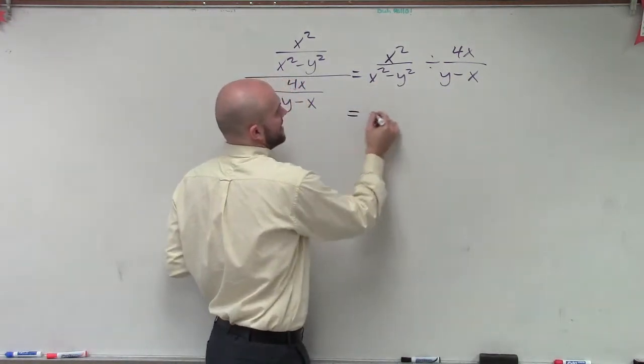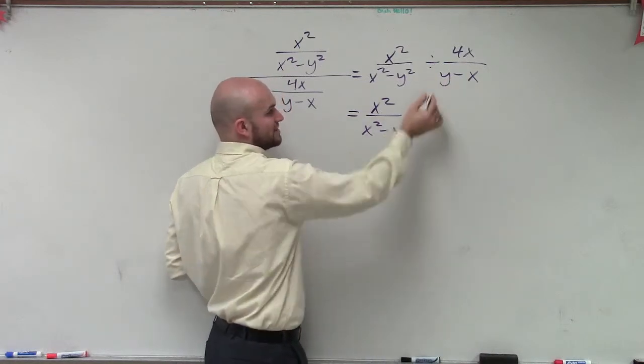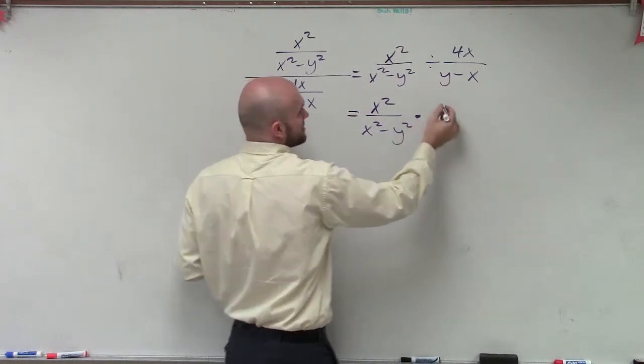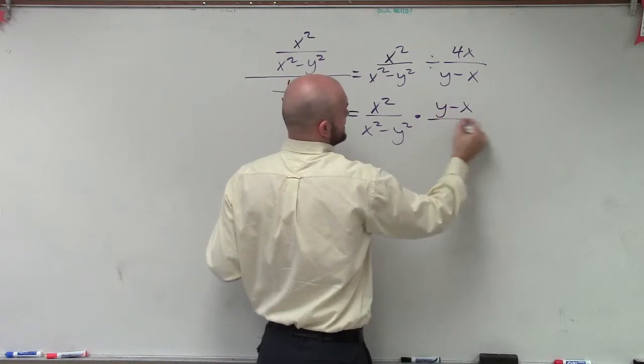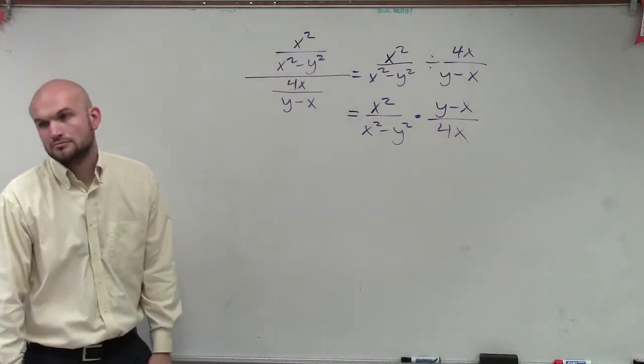So now this problem I have x squared divided by x squared minus y squared. And remember we're always flipping the divisor times y minus x divided by 4x. Okay,